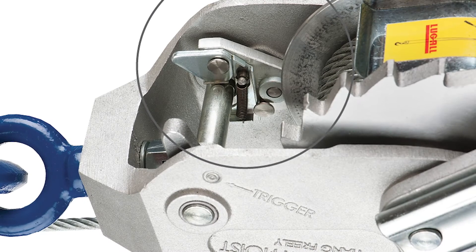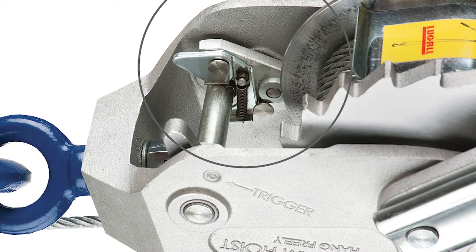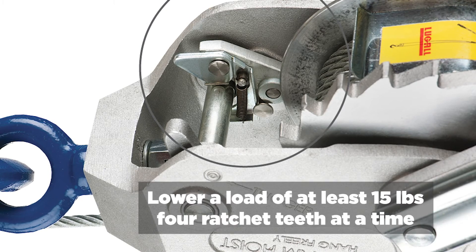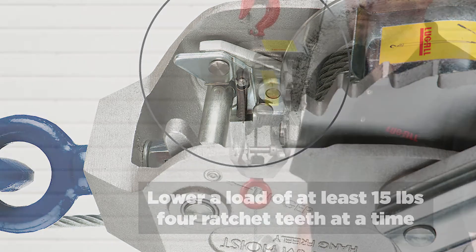The rapid lowering function is achieved through the use of a specialized rapid lowering mechanism and a cam attached to the drum. Rapid lowering allows you to lower a load of at least 15 pounds by four ratchet teeth at a time.